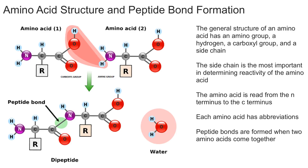Another thing to mention is that if you're given a sequence of amino acids and people don't tell you which side is which, it is implied that the amino acid is read from the N-terminus, which is the amino side, to the C-terminus, which is the carboxyl side.